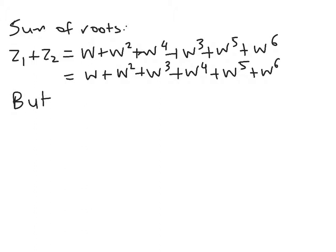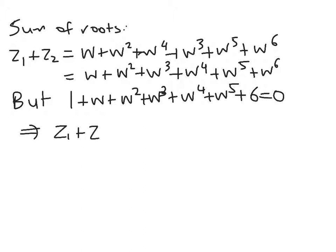But we know from above that 1 + w + w² + ... + w⁶ = 0. So that tells us that z₁ + z₂ must equal -1. So that's what we wanted for the sum of the roots.